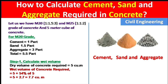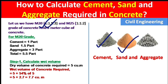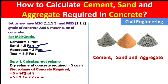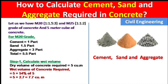Total concrete required is 5 cubic meters. First let us calculate for M20 grade of concrete. For M20 grade of concrete, the ratio of ingredients is 1:1.5:3 — one part is cement, 1.5 parts is sand, and 3 parts is aggregate. So the total parts will be 1 + 1.5 + 3 = 5.5.